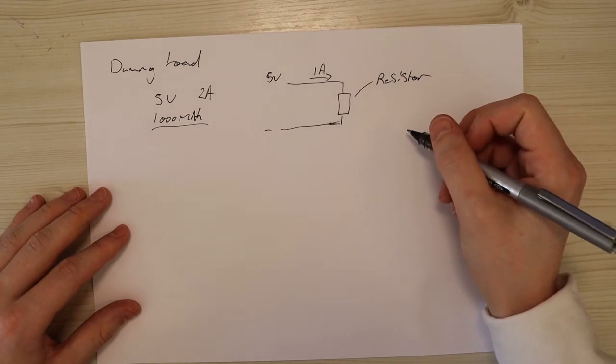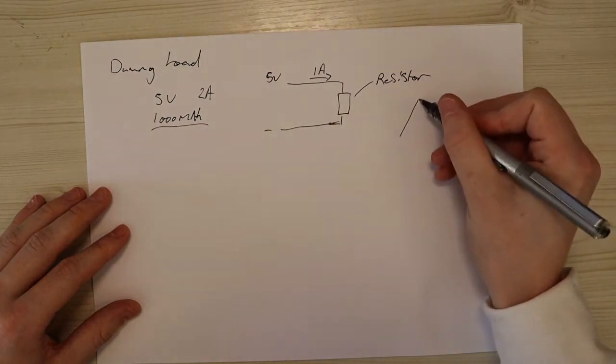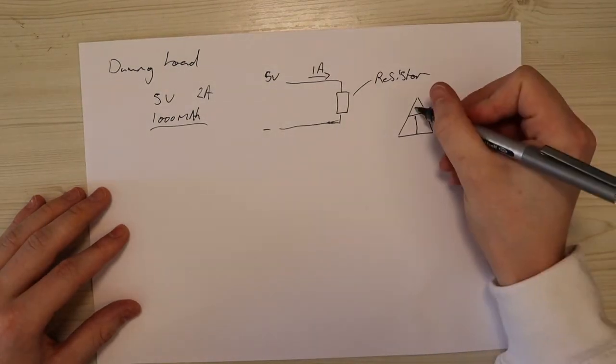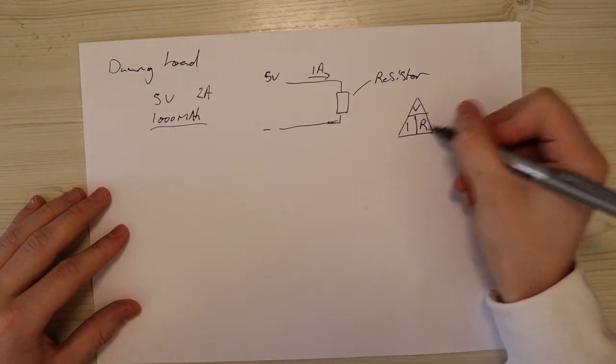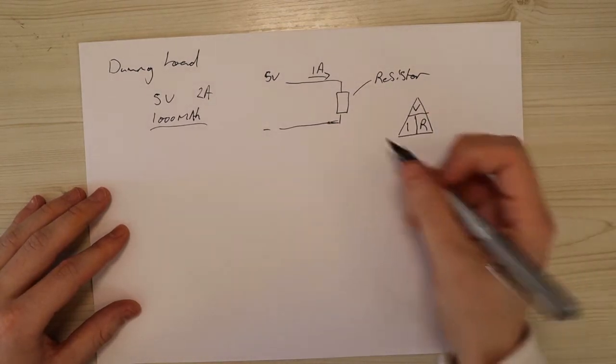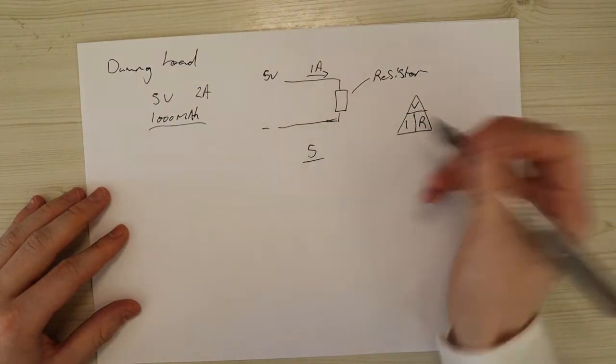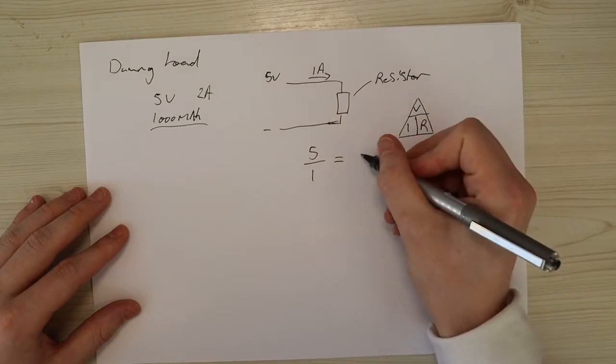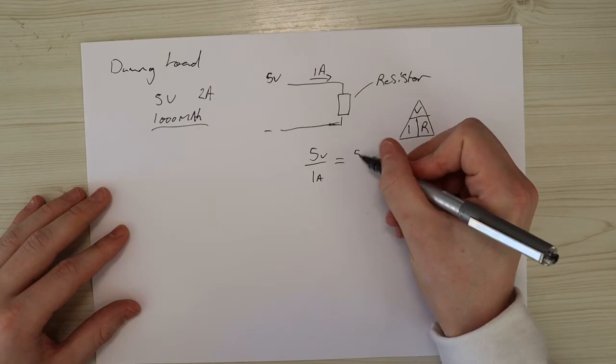Well using Ohm's law which states voltage over current equals resistance, you can remember this using the triangle. Where you've got a triangle like this, you've got the volts, you've got the current and we've got the resistance. So we've got 5 volts, we want to divide it by 1 amp which means the resistor needs to be 5 ohms.